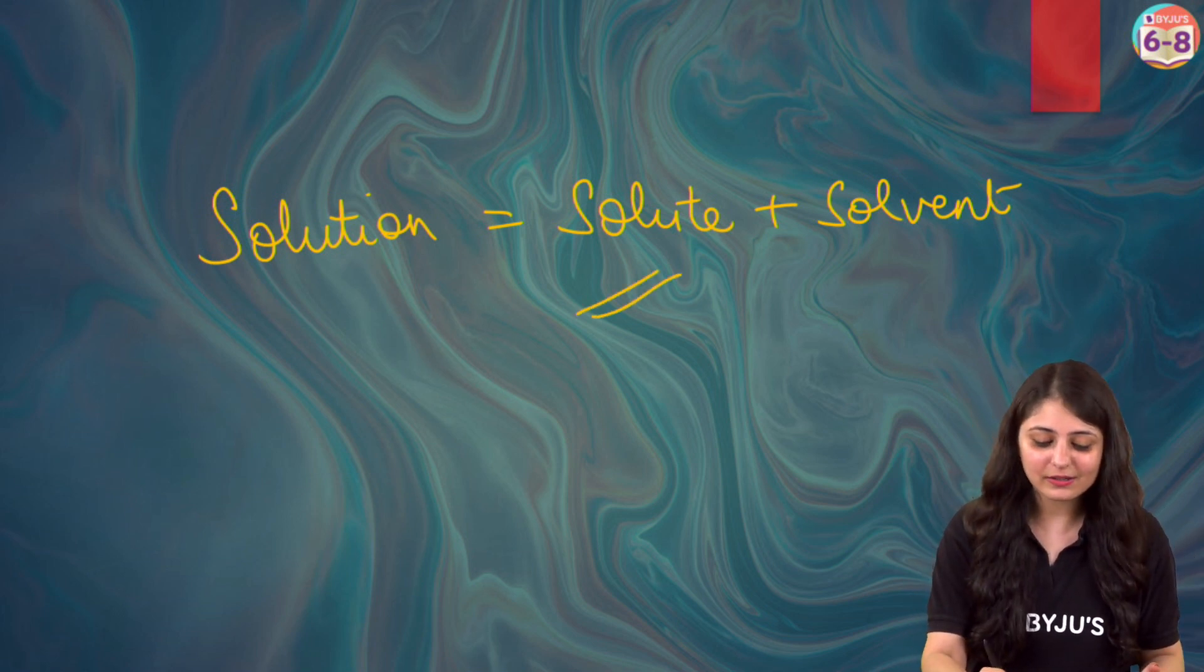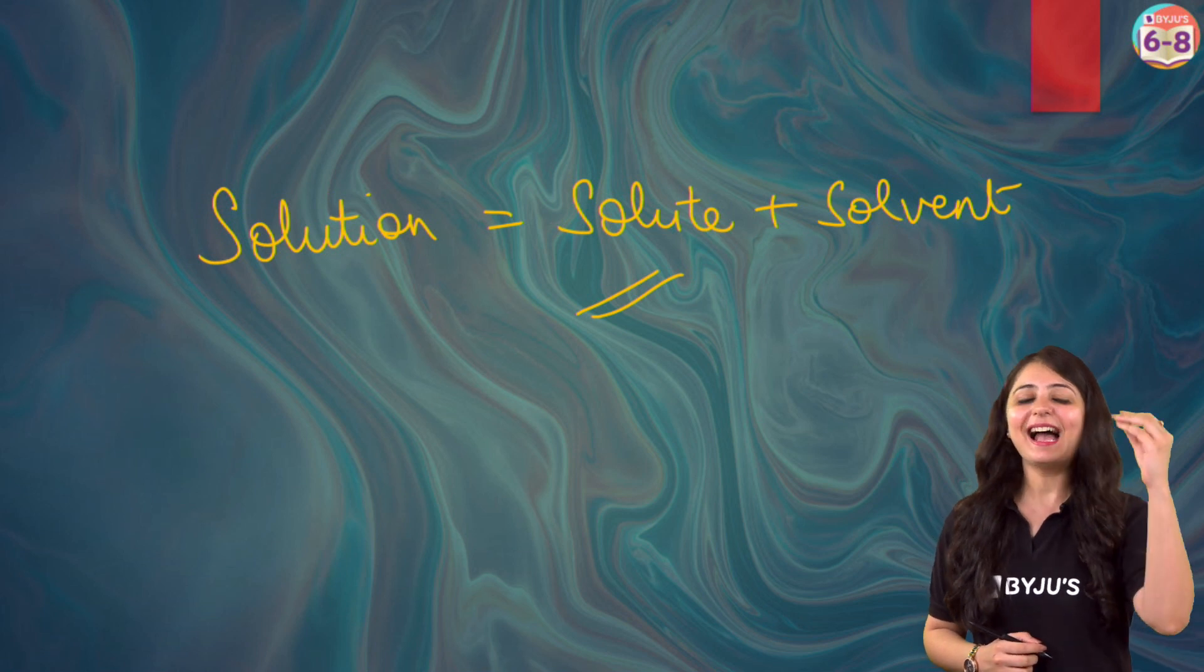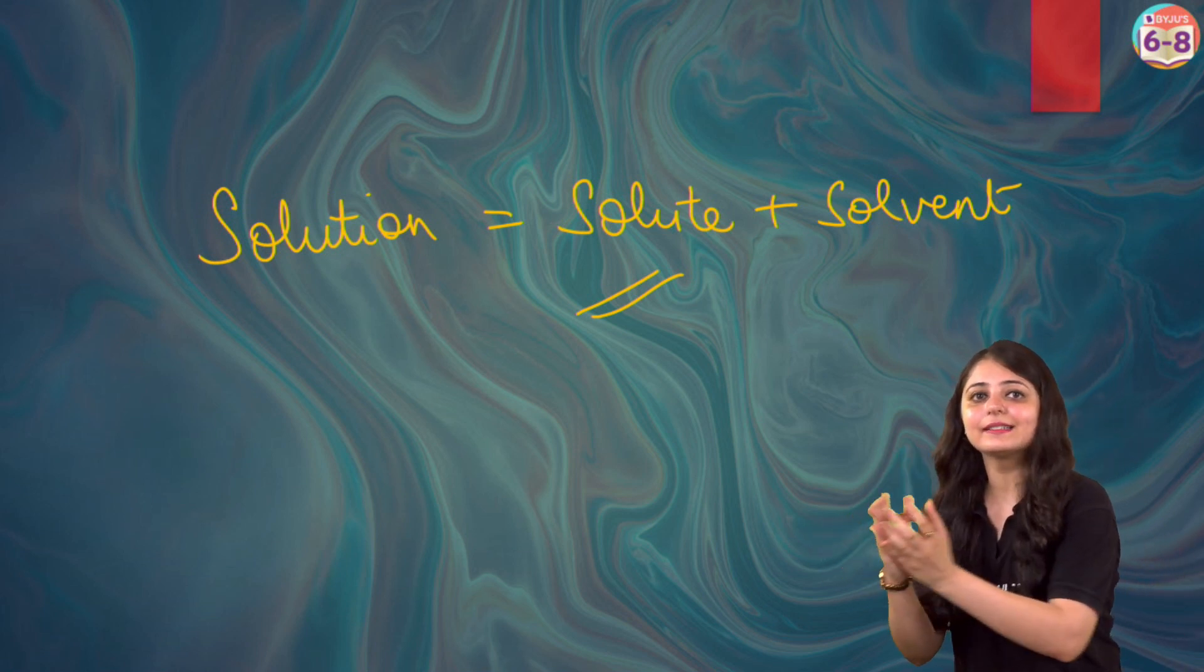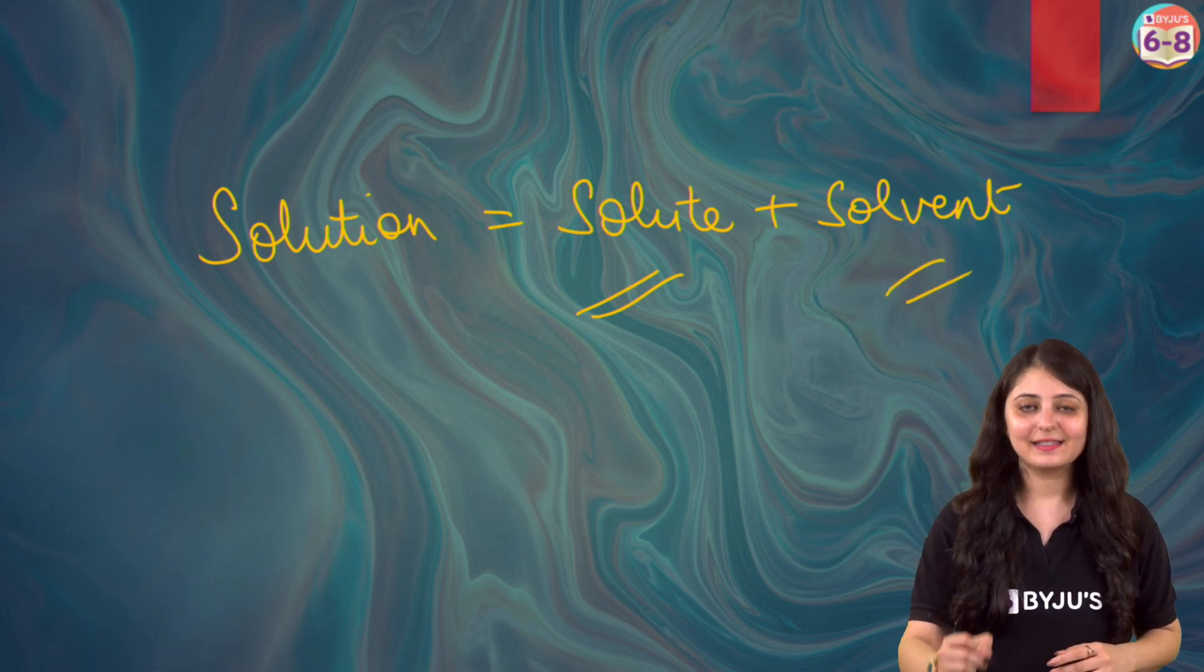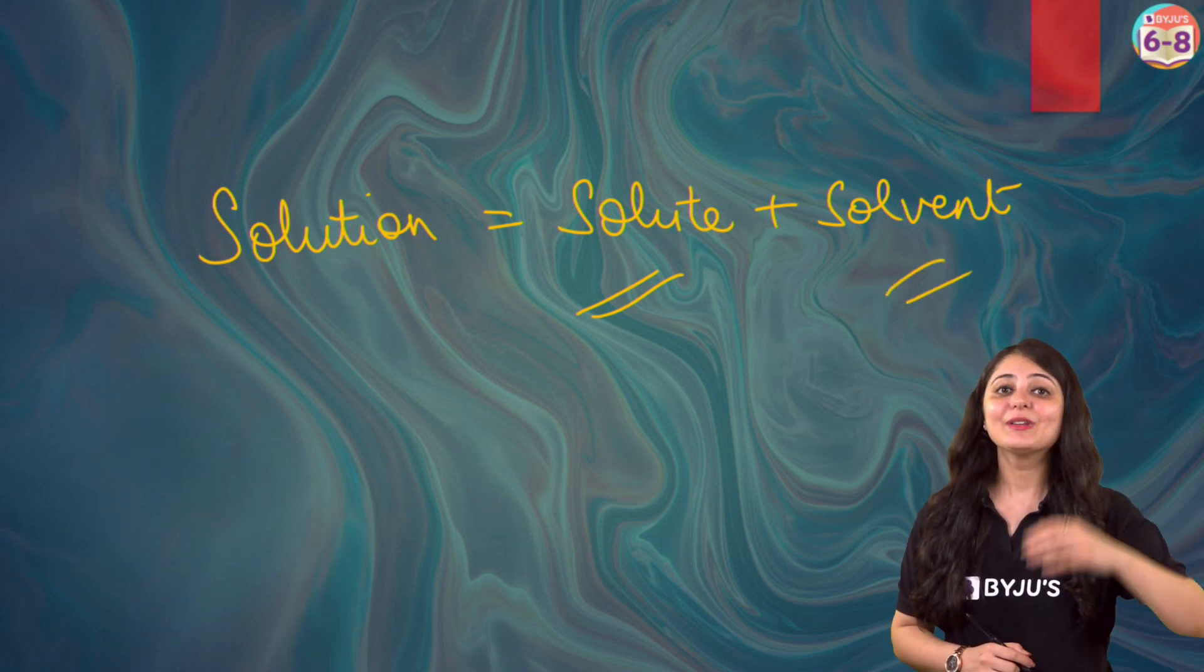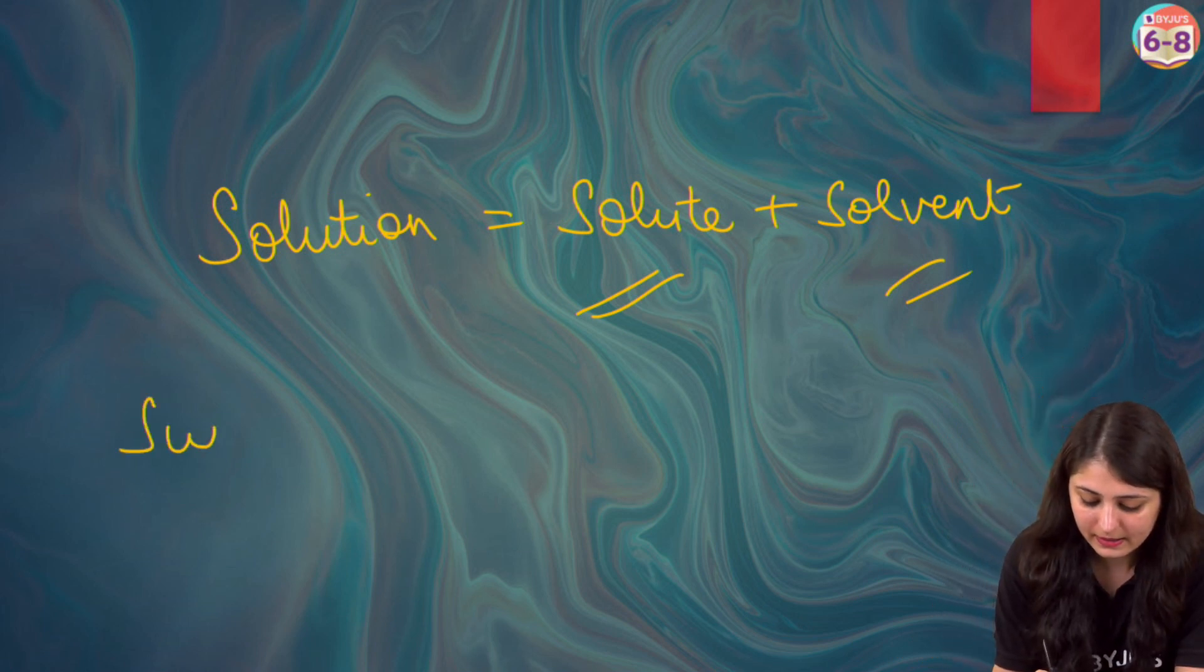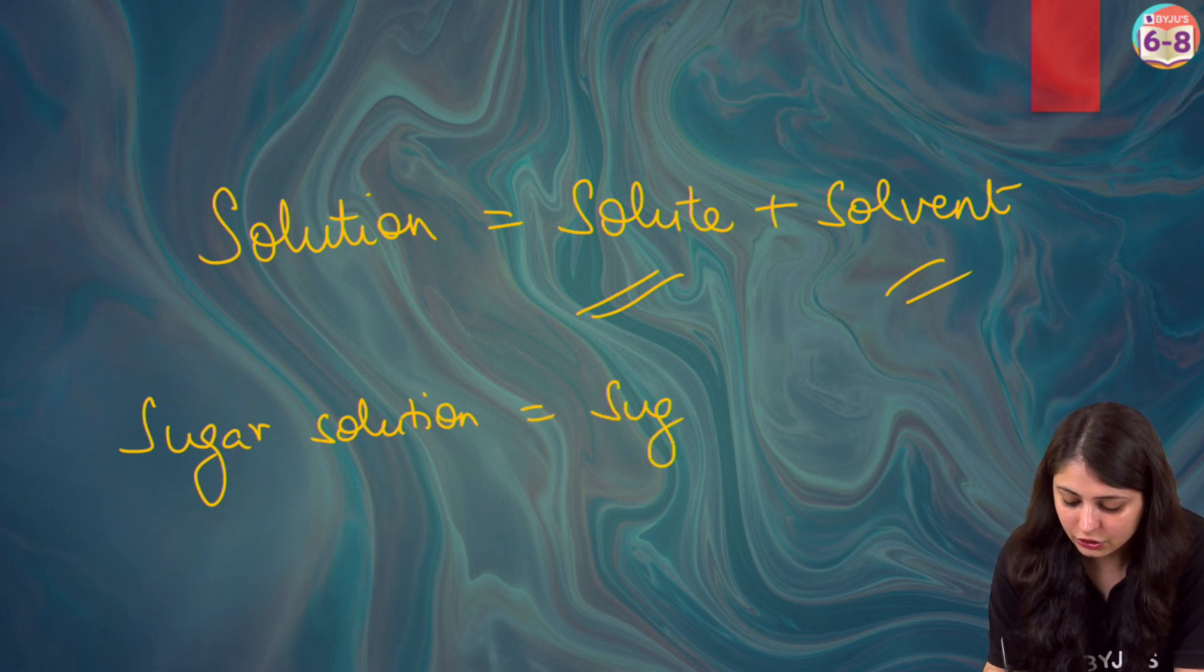A substance that is dissolved in a solution is called a solute, and a solvent is basically a chemical substance that dissolves another substance in it.